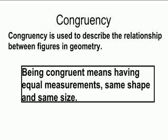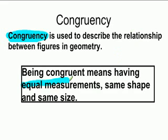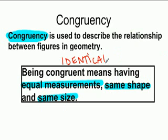The first thing we need to go over is: what does congruency mean? The word congruency describes the relationship between figures in geometry. It is just a descriptive word. To be congruent, figures need to have equal measurements, the same shape, and the same size — in other words, they are identical.